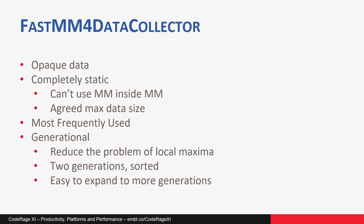Internally, each collector stores data in a sorted static array of limited size, which keeps the most frequently used data at the top. In this case, most frequently used means data that is stored in the collector most often — in other words, call stacks that occur more frequently will be kept at the top. To minimize the effects of local bursts of allocation or deallocation, data is kept in two generations and is promoted from generation 1 to generation 2 once per second, but only items with frequency greater than 1 are promoted.